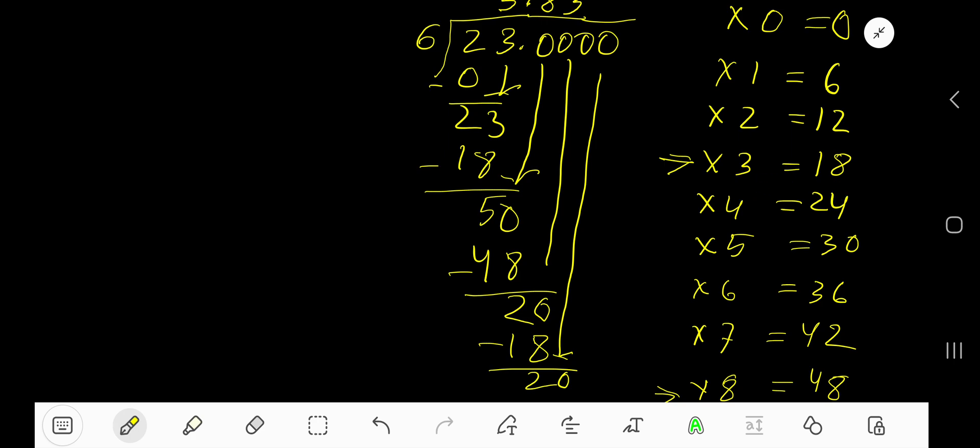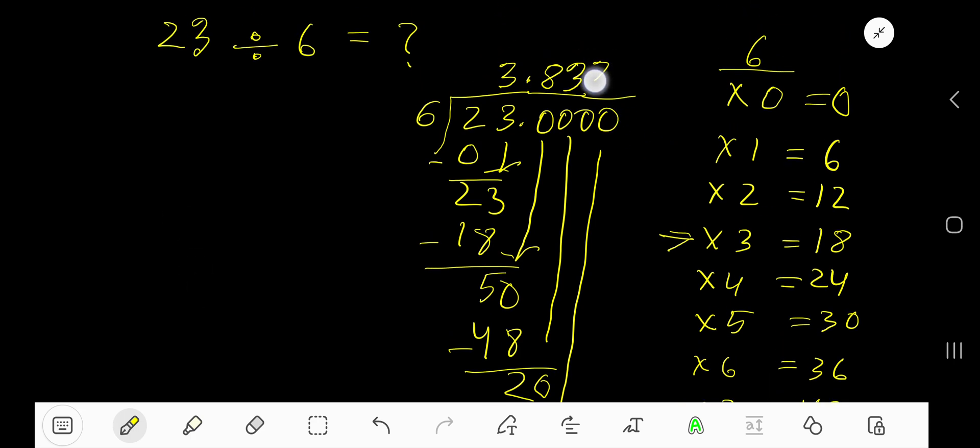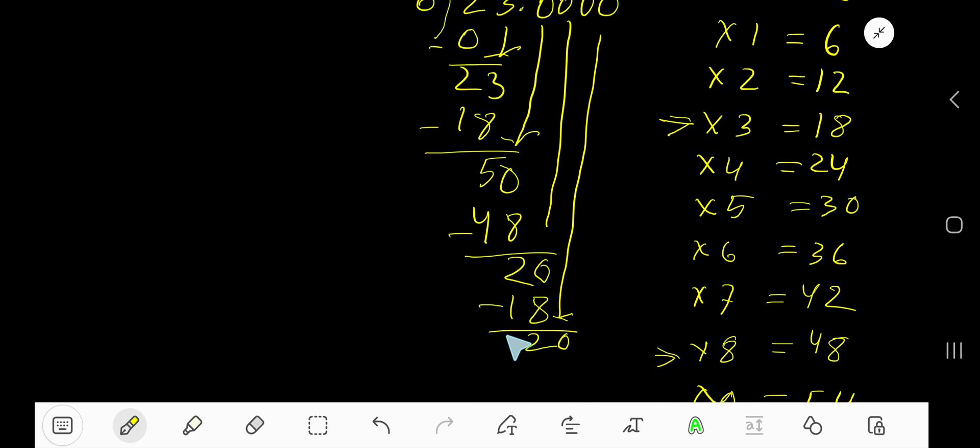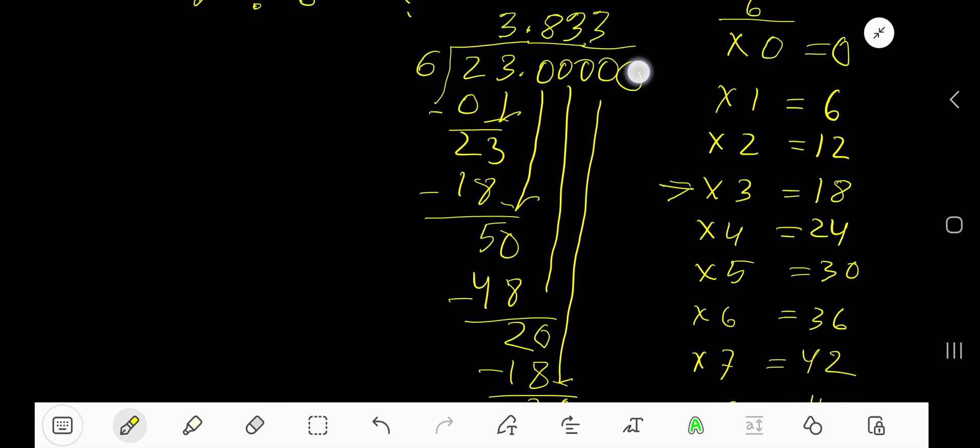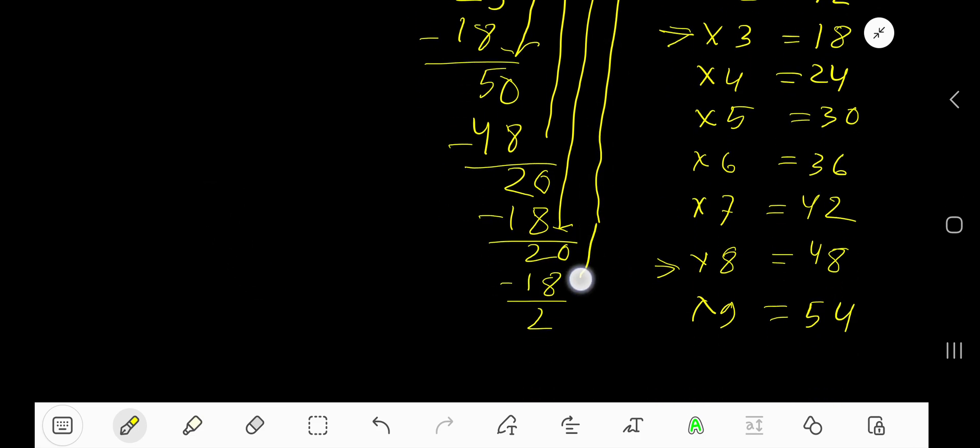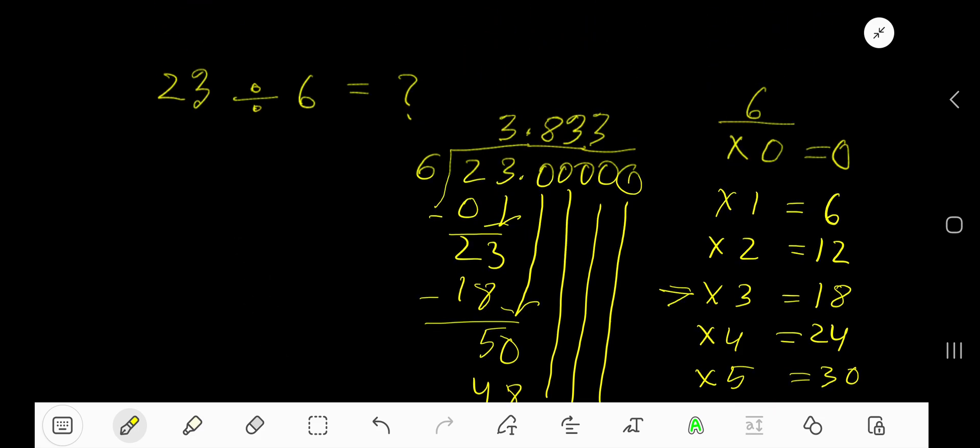6 goes into 20, 3 times. Write 3, 3 times 6 is 18. So again, subtract 2, bring down the next 0. 6 goes into 20 again, 3 times. Look, 3 is repeating.